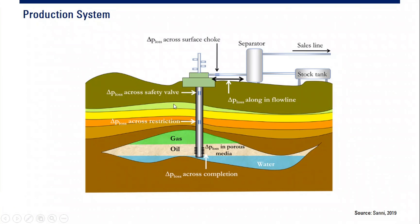This is the production system for onshore — previously we saw offshore, and this is onshore. You can see we have the reservoir: the water layer, the oil layer, and also the gas cap. We have the well, which will produce fluid from the reservoir, and the fluid will go to the station or surface facility. Here we have a separator, stock tank to store the oil, and then a sales line.